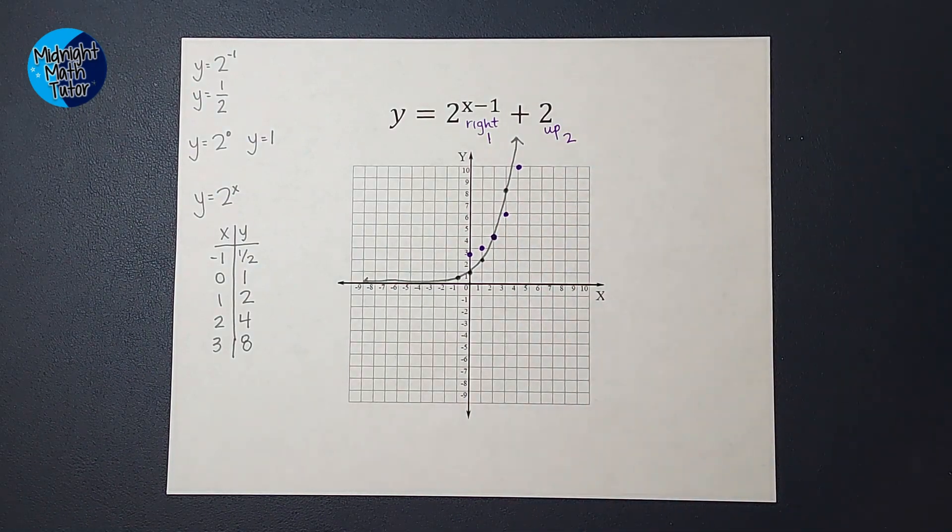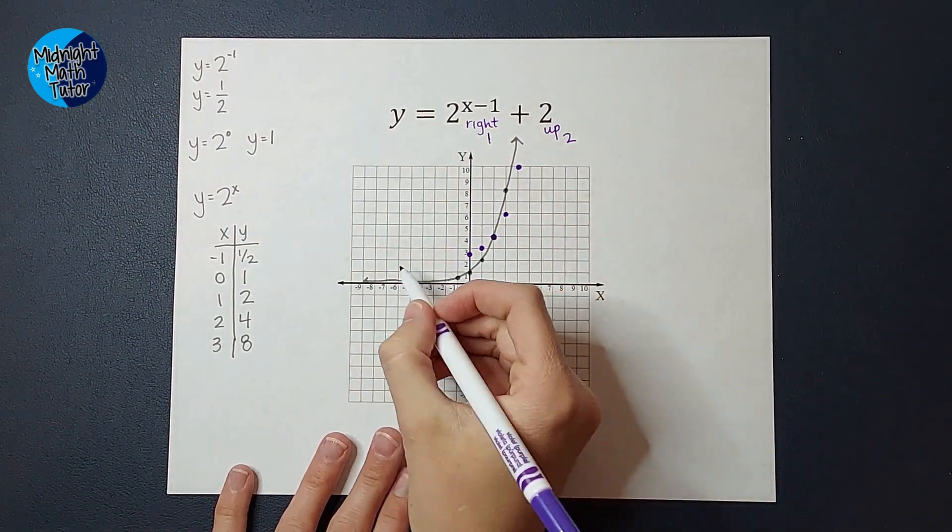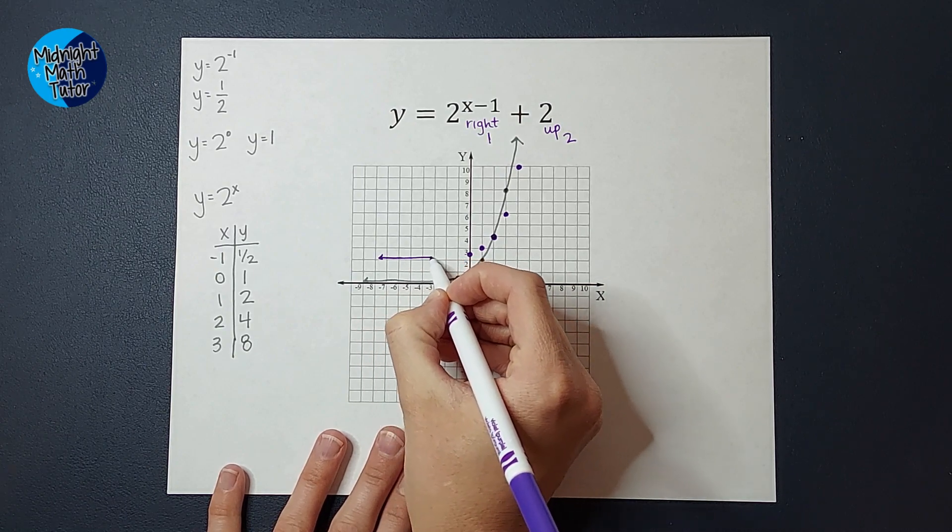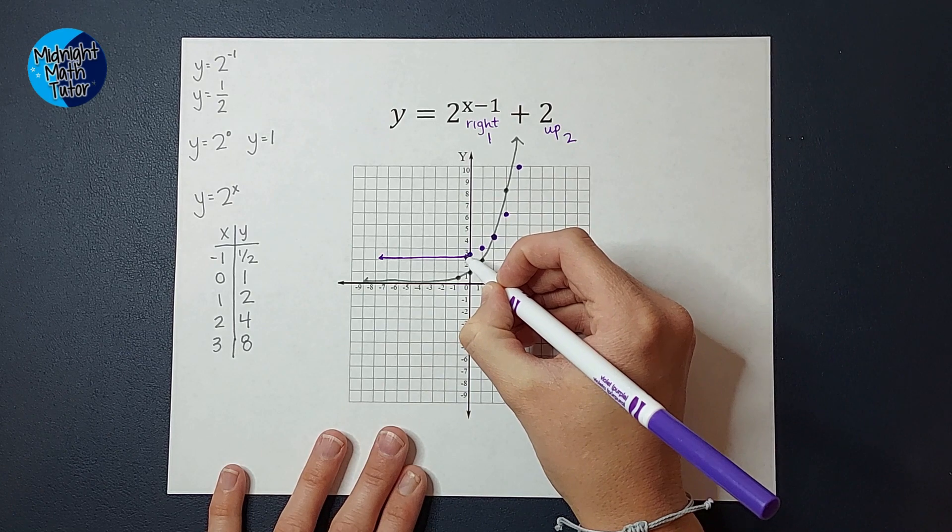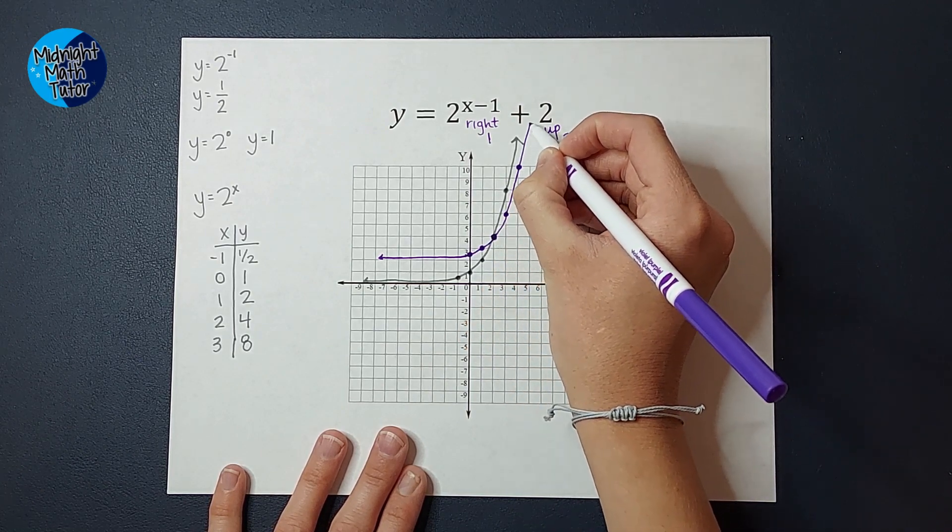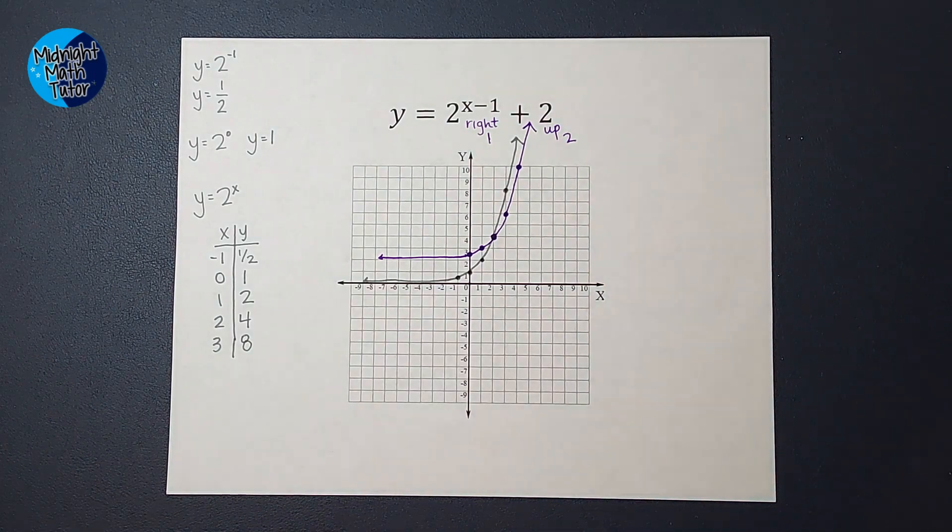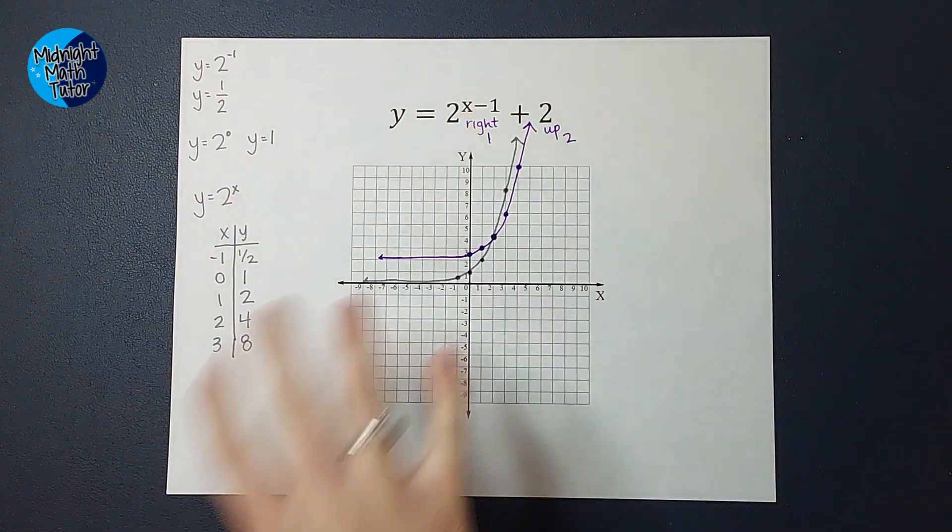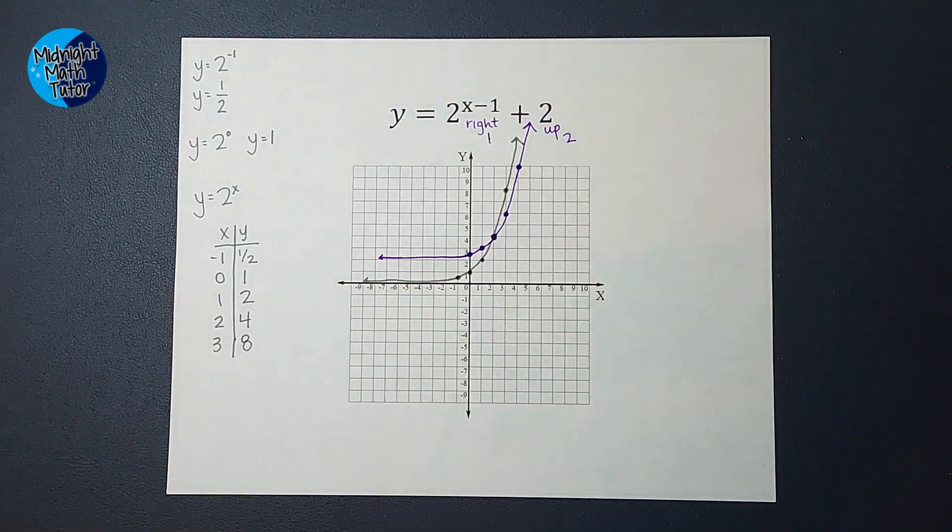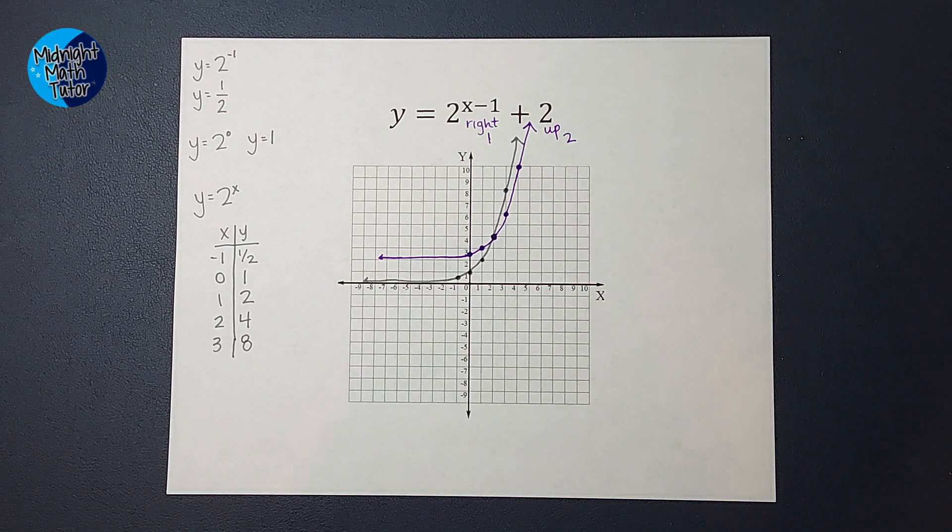So the purple is my new graph. Now it's going to get closer and closer to this 2, but never actually cross it, and then it's going to get steep very quickly. So we figured out what our parent graph would look like, we graphed it, and then we just did our transformation. We shifted it to the right 1 and up 2. I hope this made sense. If you need some more examples, I'll link a playlist for you.